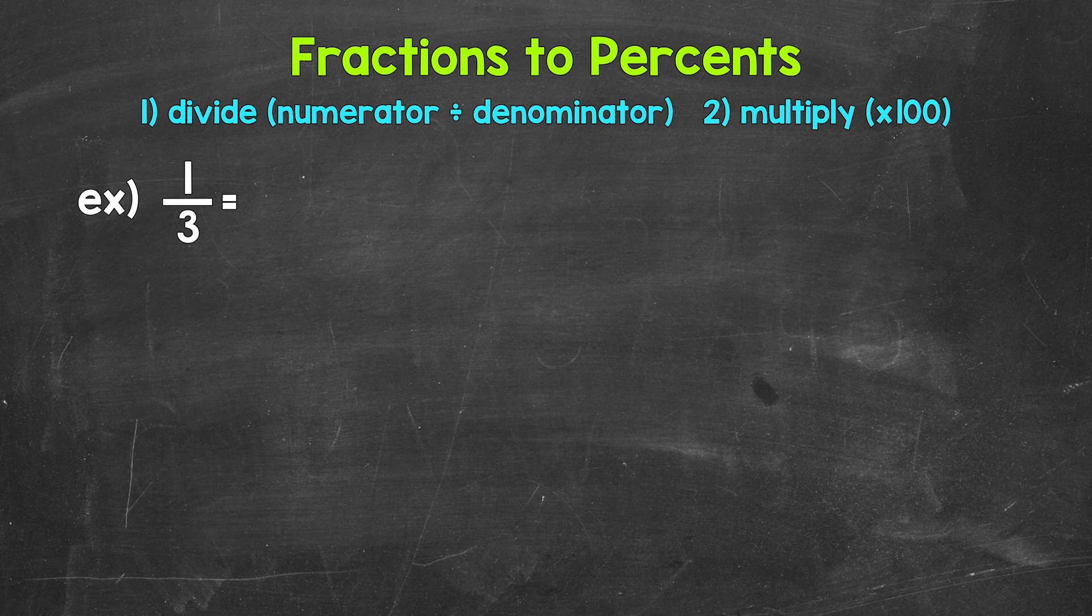This will give us a decimal. Once we have that decimal, we convert it to a percent by multiplying it by 100. And a quick way to multiply by 100 is to move the decimal twice to the right.